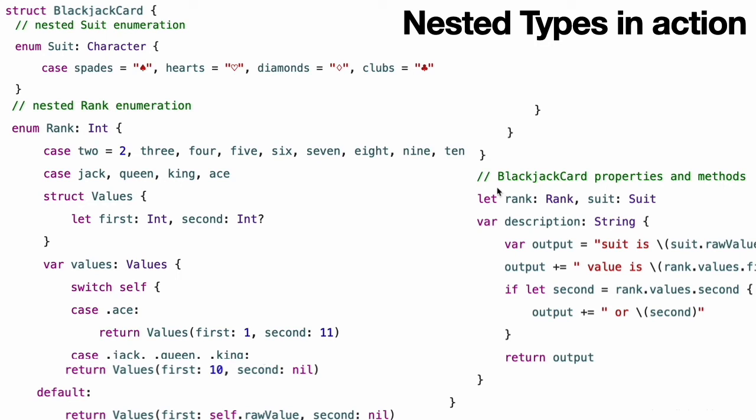The BlackjackCard structure itself has two properties, Rank and Suit. It also defines a computed property called Description, which uses the values stored in Rank and Suit to build the description of the name and value of the card.